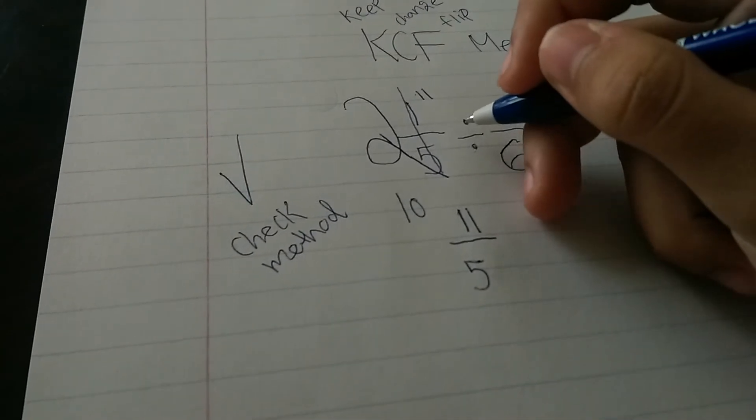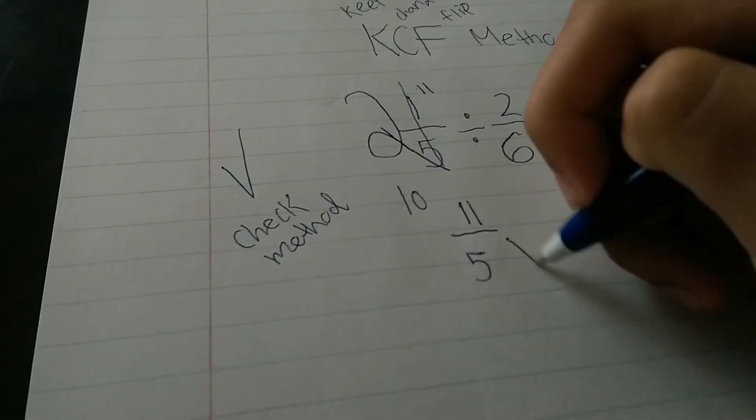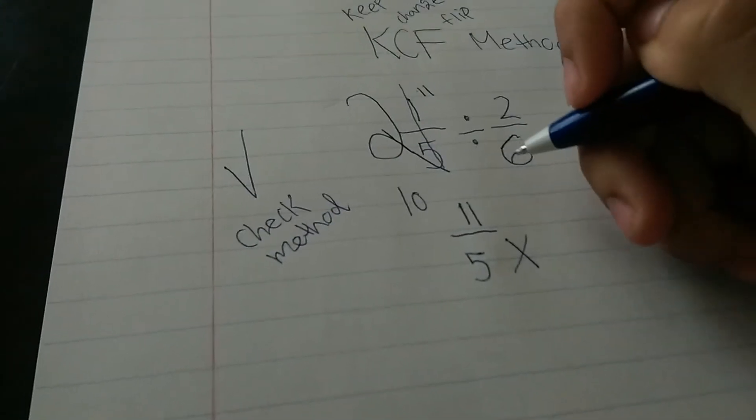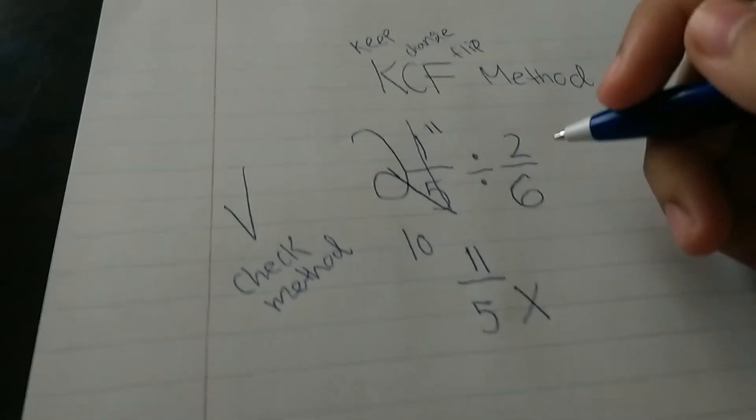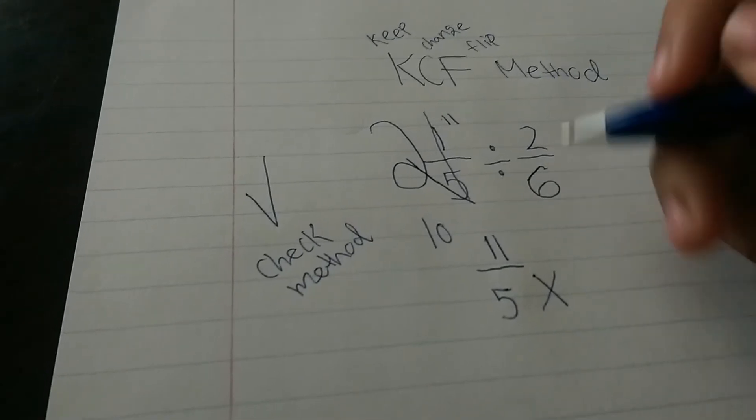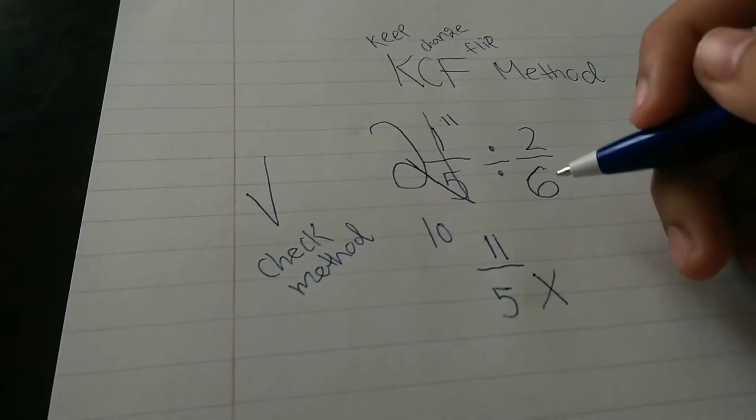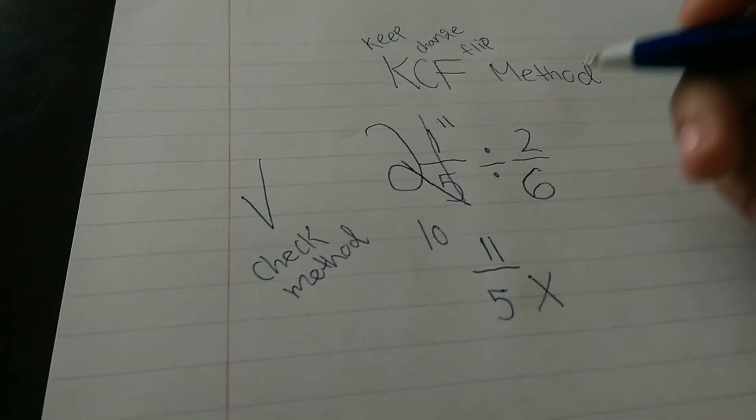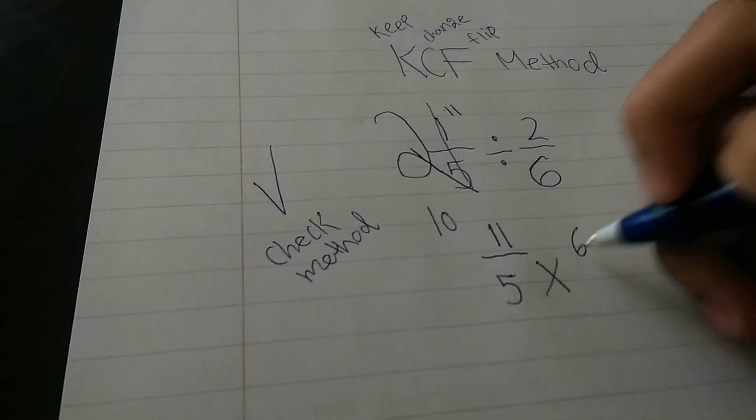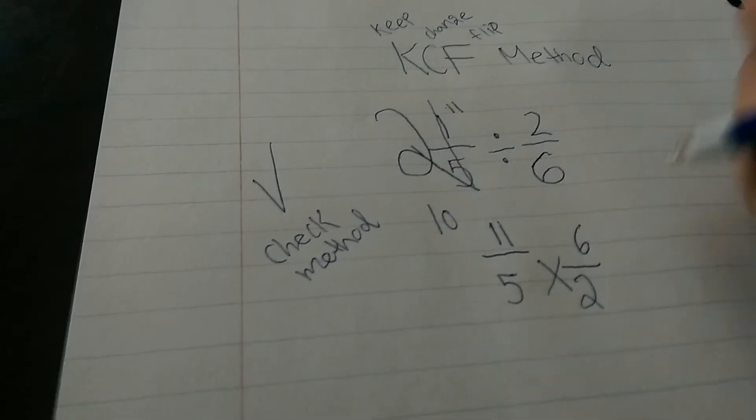And then, you change the division sign into an opposite of it, which is a multiplication, and you change this, you flip this. And by flipping, I meant you find a reciprocal. Reciprocal is when you change the numerator and the denominator around. So, it'll be 6/2.